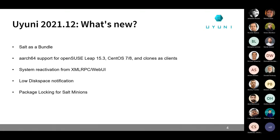We are also adding system reactivation from the XML-RPC and web UI, because in the past it was only possible from the bootstrap script. Now when you log in, if the Uyuni instance is running out of space you will see a low disk space notification. This won't contain all the details but will allow anyone to alert the administrator that something has to be done, since if the server runs out of disk space services will stop. Ideally every Uyuni server administrator should be monitoring the hardware and server status.